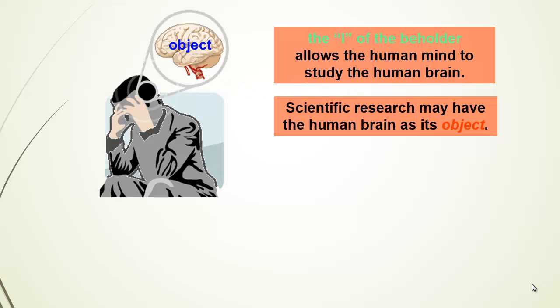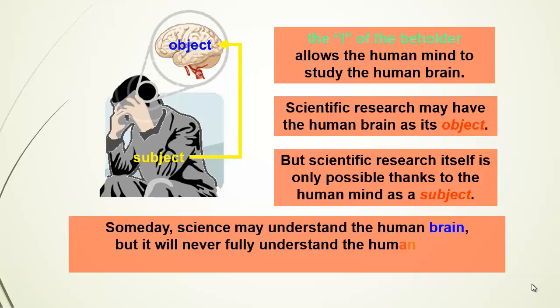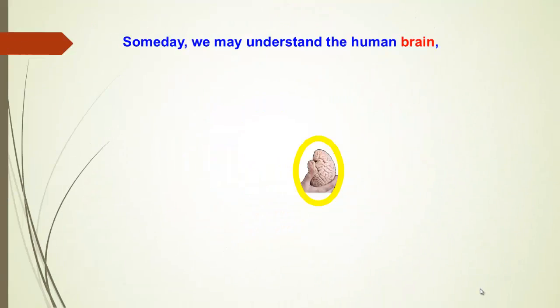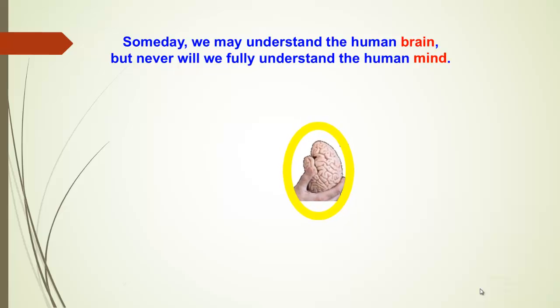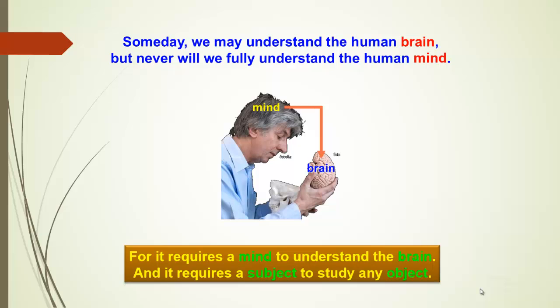All scientific research, even in neuroscience, may have the human brain as its object. But it is only possible to do neuroscience thanks to the human mind as a subject. Without a subject, we cannot study an object. Someday science may understand the human brain, but I think it will never fully understand the human mind, because of the simple fact that science itself depends on the working of the human mind. It requires a mind to understand the brain. It requires a subject to study any object.